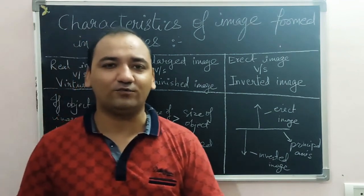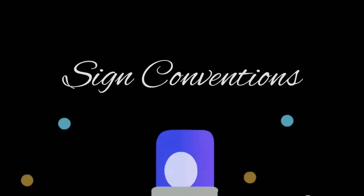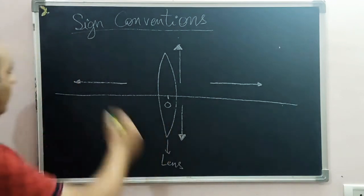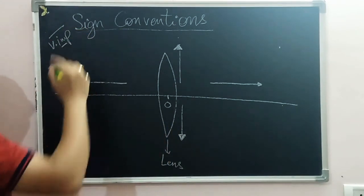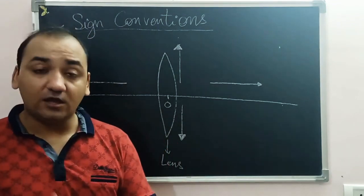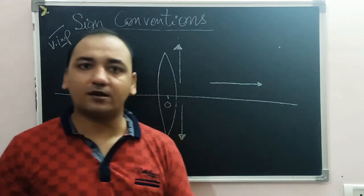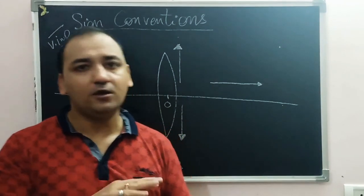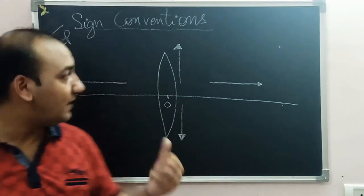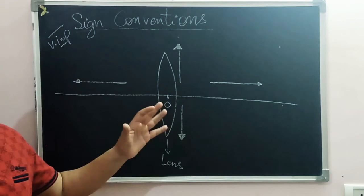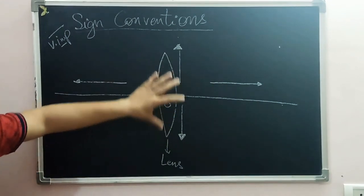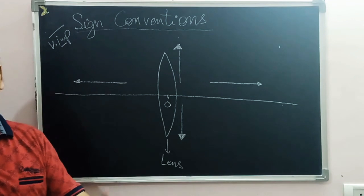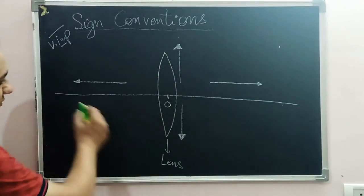Now we come to one of the most important topics: sign conventions. This is extremely important. The rules regarding positive and negative signs — if you do not follow sign conventions, the chances of error in your numerical answers are 99.999%. If sign conventions are not followed correctly, your answer will definitely be wrong.